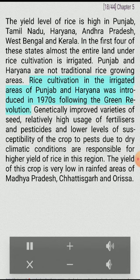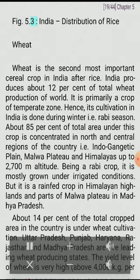Punjab and Haryana are not traditional rice-growing areas. Rice cultivation in the irrigated areas of Punjab and Haryana was introduced in the 1970s following the Green Revolution. Genetically improved varieties of seed, relatively high usage of fertilizers and pesticides, and lower levels of susceptibility to pests due to dry climatic conditions are responsible for higher yield of rice in this region. The yield of this crop is very low in rainfed areas of Madhya Pradesh, Chhattisgarh, and Orissa.